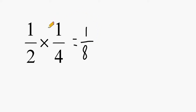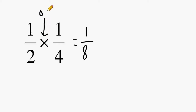Another way to interpret this problem is by figuring out what 1 half of 1 quarter is. The operation of multiplication can also be considered the word "of." So whenever you see a multiplication sign, you can replace that with the word "of" — what is 1 half of 1 quarter?